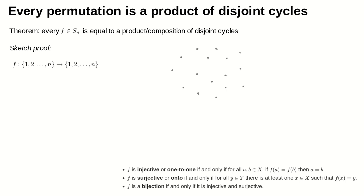For our sketch proof we're going to think about a permutation f in Sn — in other words f is going to be a bijection from the set {1, 2, 3, ..., n} to itself — and we're going to illustrate f in the usual way: if f(i) equals j, we draw a line from i to j. These dots on the side of the screen illustrate the numbers 1 through n, and I'm going to draw arrows to show when f of one of these numbers equals another.